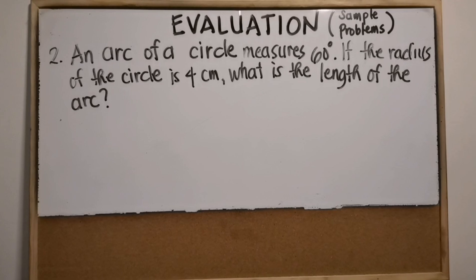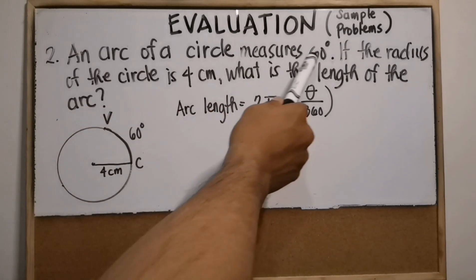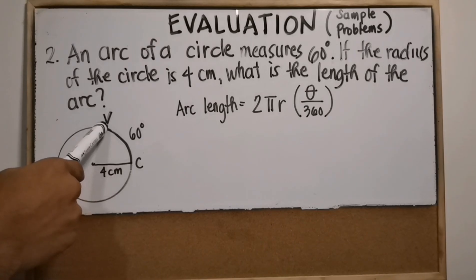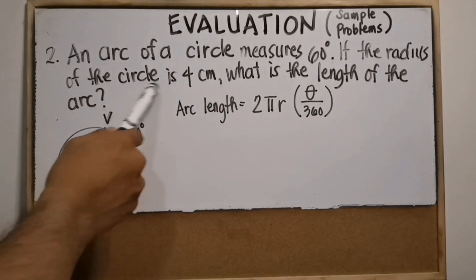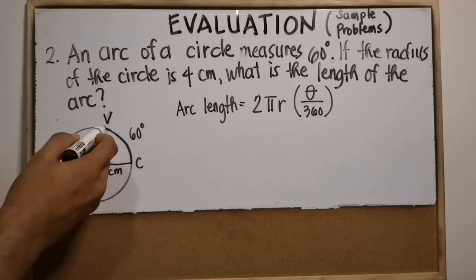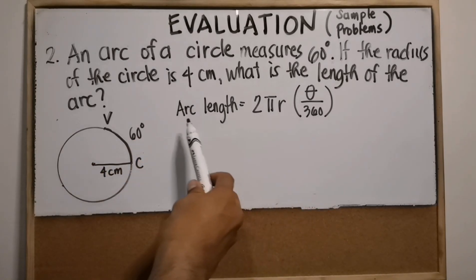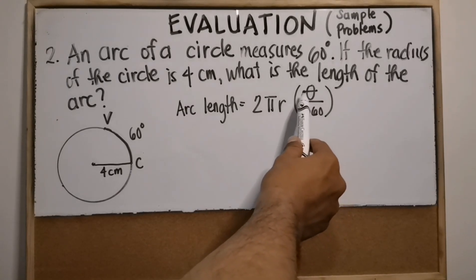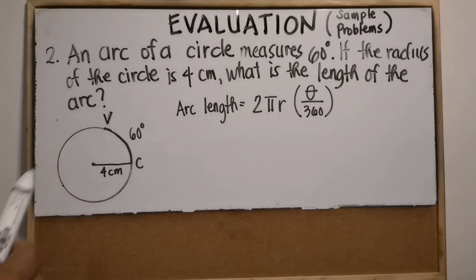For number two: an arc of a circle measures 60 degrees. If the radius of the circle is 4 centimeters, what is the length of the arc? Let's draw our problem. We have a circle with arc VC measuring 60 degrees and a radius of 4 centimeters. The arc length formula is: arc length equals 2π r times the measure of the arc in degrees over 360.